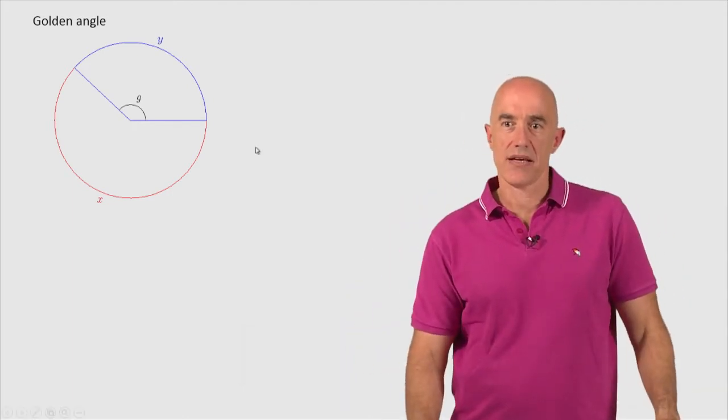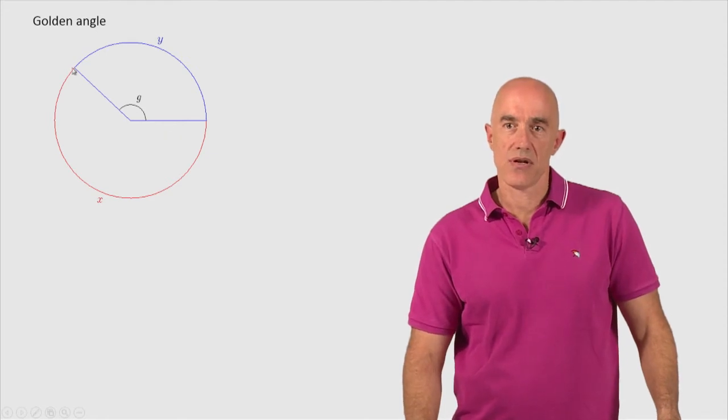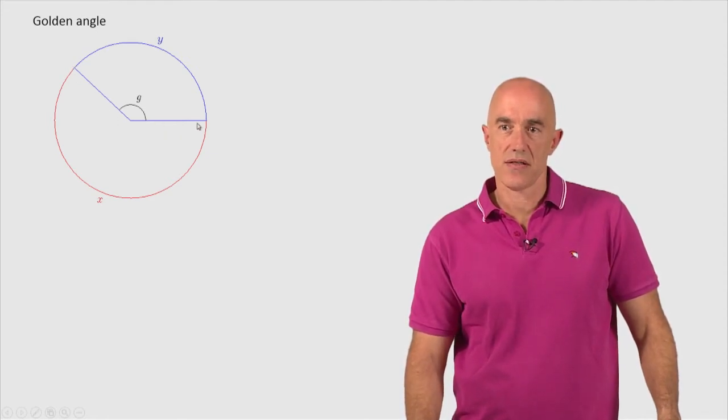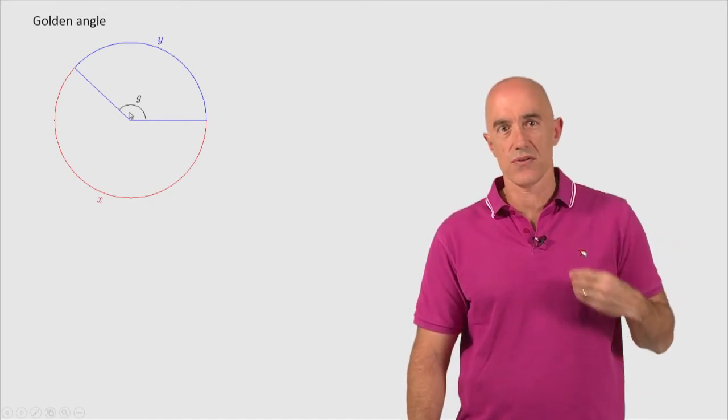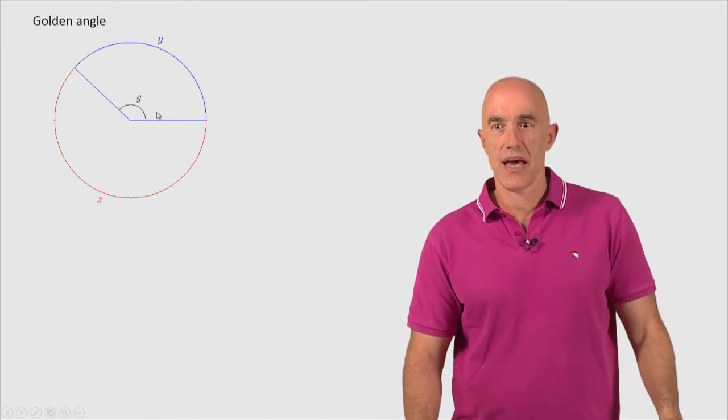We take a circle and we draw this angle in the circle, splitting the circle into two arc lengths, x and y.